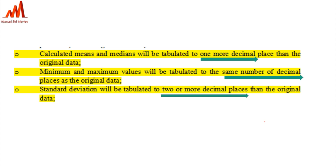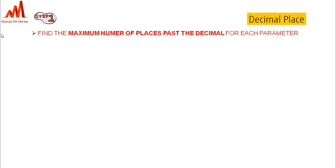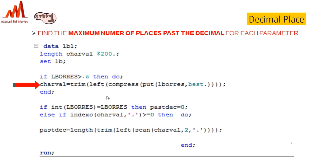According to the SAP, we can give the decimals in the summary statistics table. In step one, find the maximum number of places past the decimal for each parameter — how many decimal digits are there after the decimal point. To do this, convert the numeric LBORRES value into a character value. If there is no decimal, then past_decimal equals zero. If LBORRES contains a decimal, use the SCAN function to find how many digits are after the decimal point.